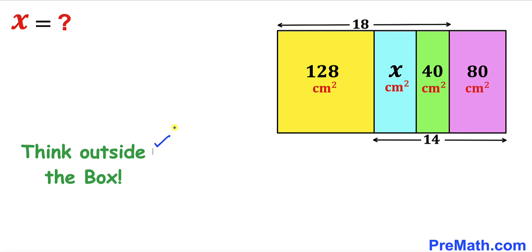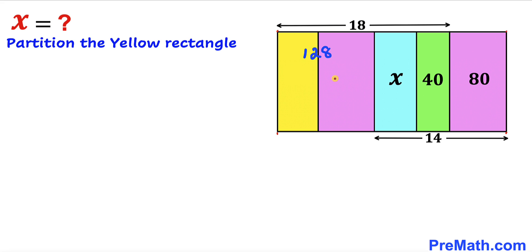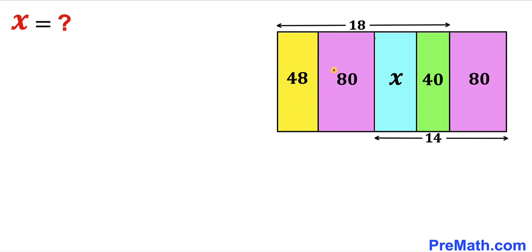We are going to partition this yellow rectangle. The yellow rectangle consists of the purple rectangle along with another part. We know the area of the purple rectangle is 80 cm², so that part also has area 80 cm². The whole yellow rectangle is 128 cm², so the remaining part of the yellow rectangle is 128 minus 80, which gives us 48 cm².